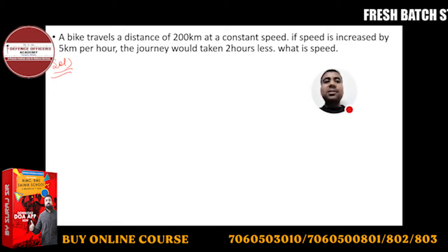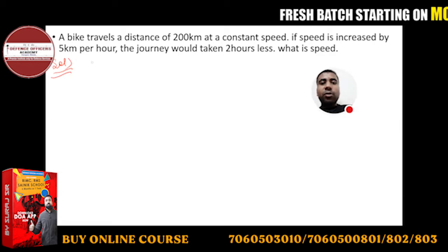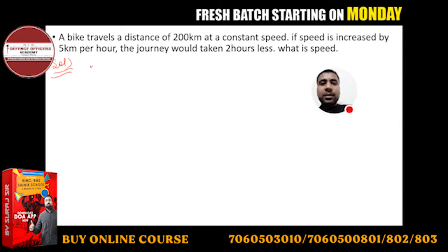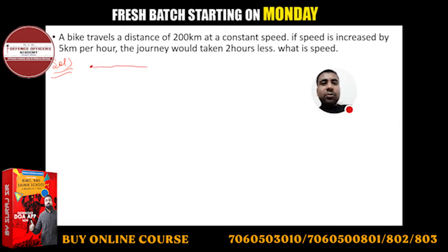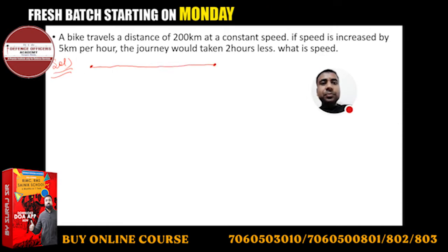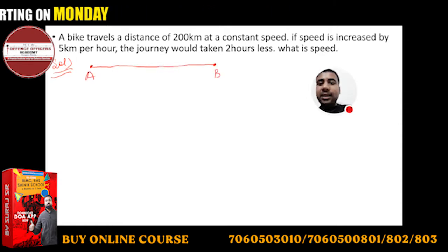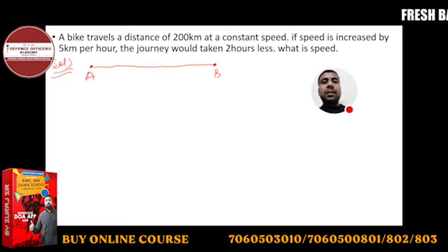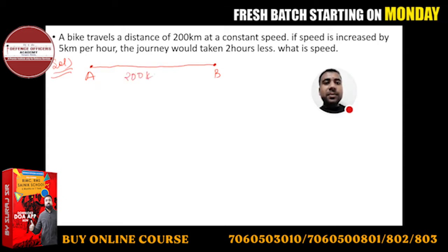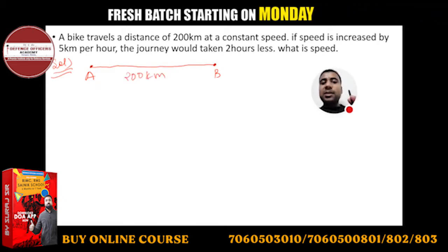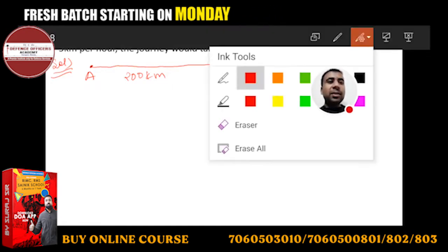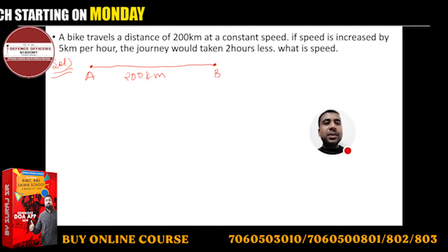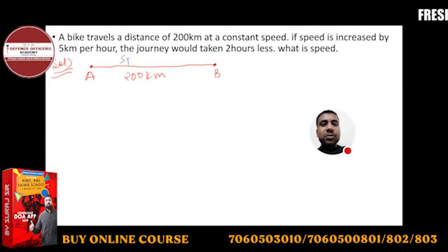A bike travels a distance of 200 km at a constant speed. The distance is 200 km. The speed is constant but not given, so we take the constant speed as x km per hour.